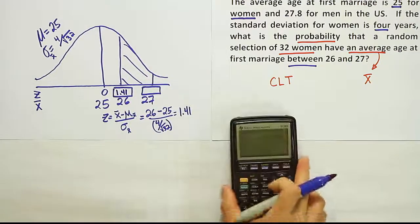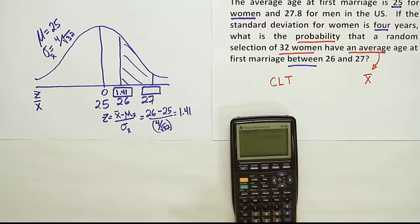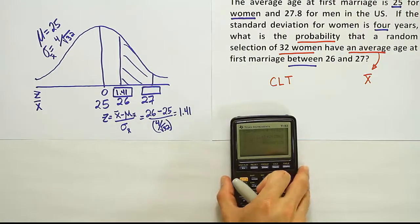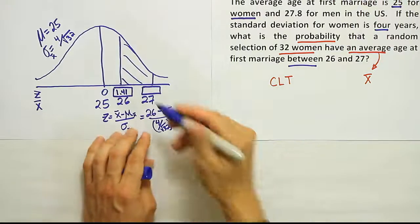Alright, so the first number is 1.41. The second Z-score is going to be 27 minus 25, that gives you 2. You don't have to work that out in your calculator. But at this point, then we just divide by 4 divided by the square root of 32. And once you've done that, you end up with the answer 2.83.